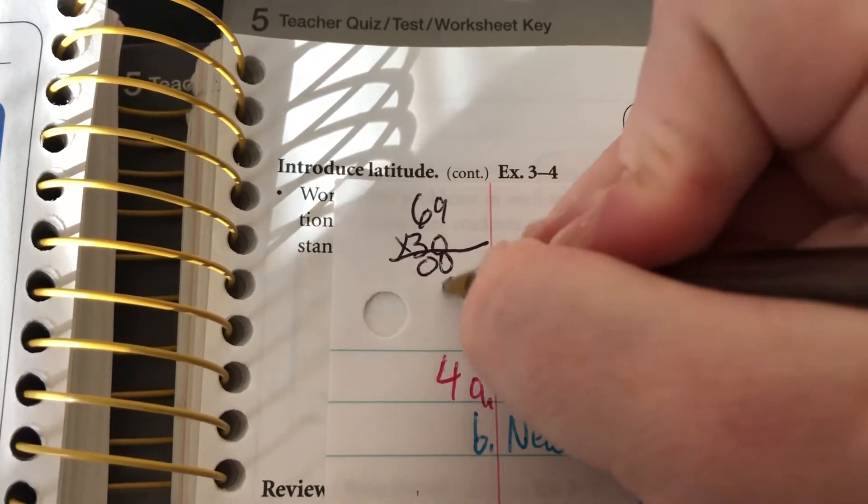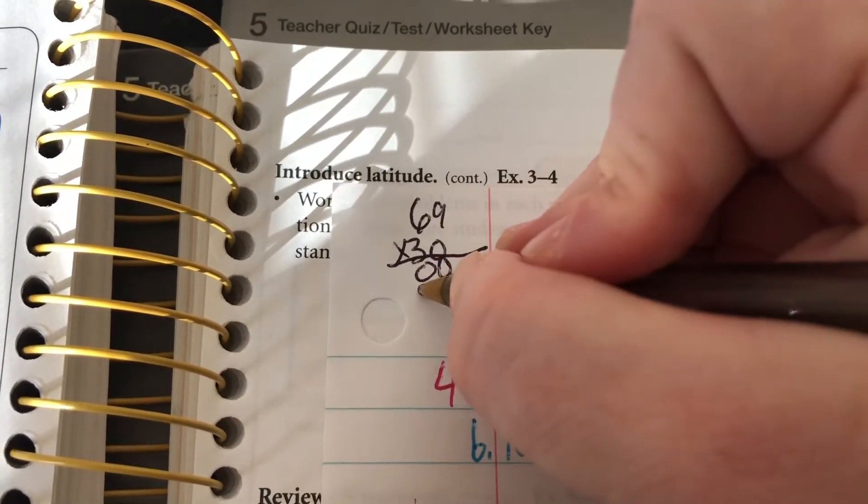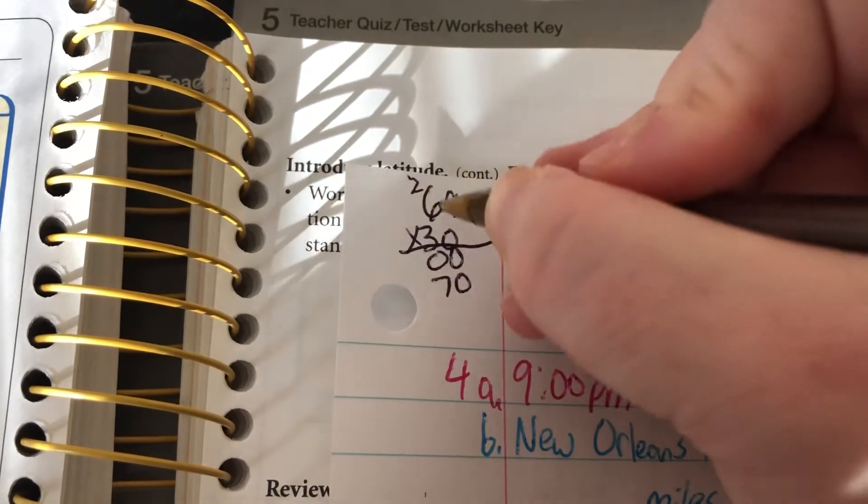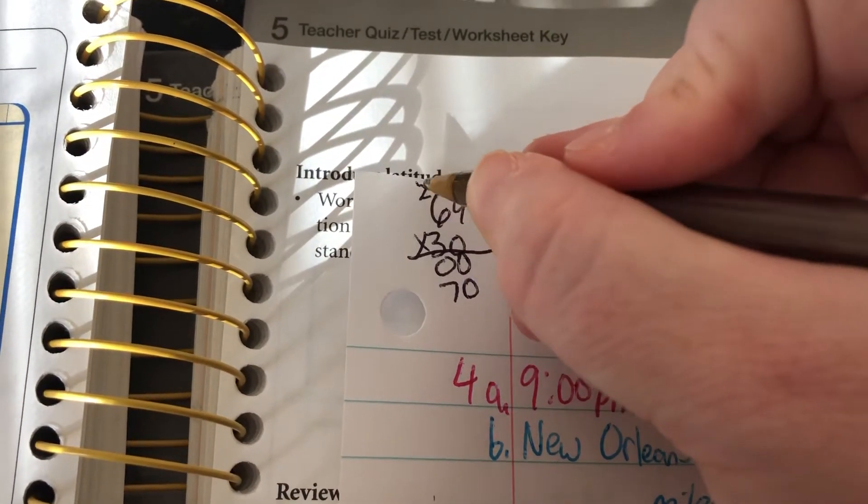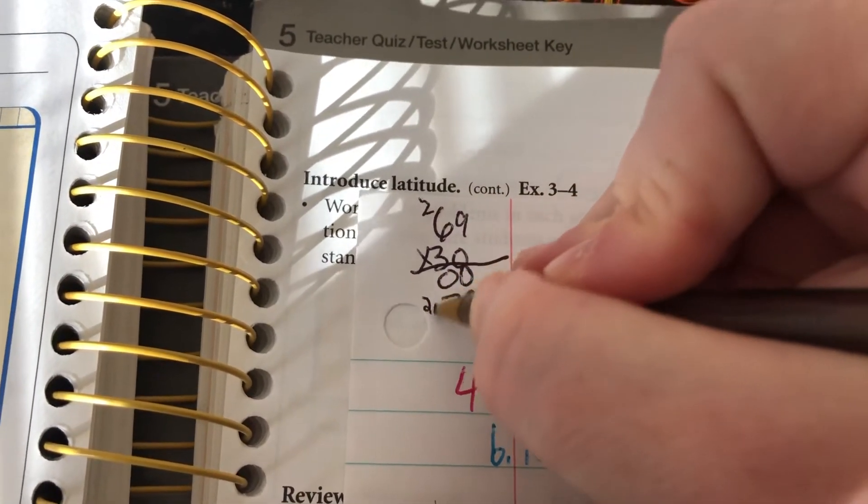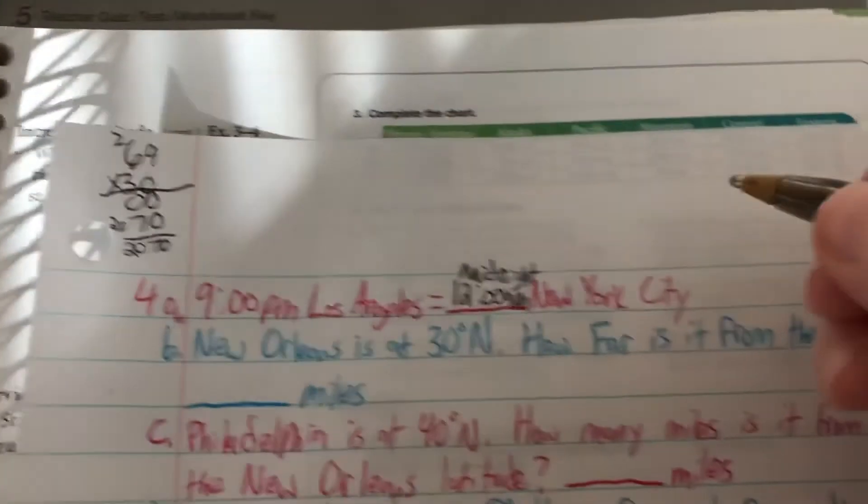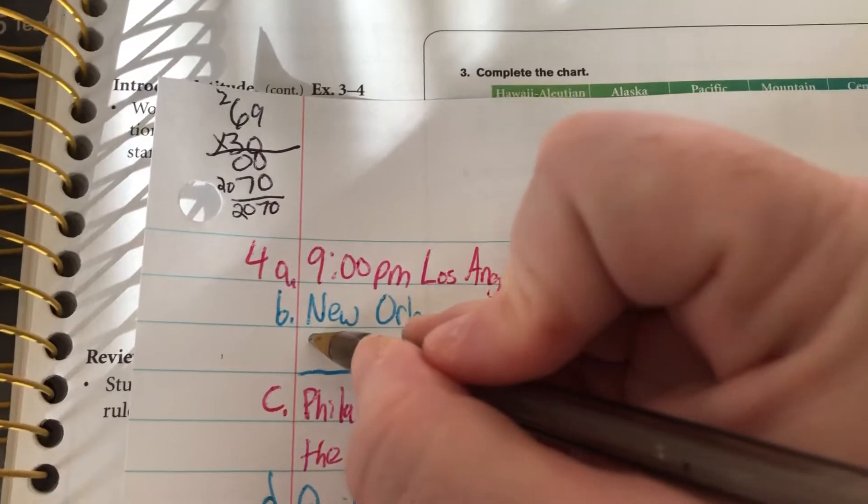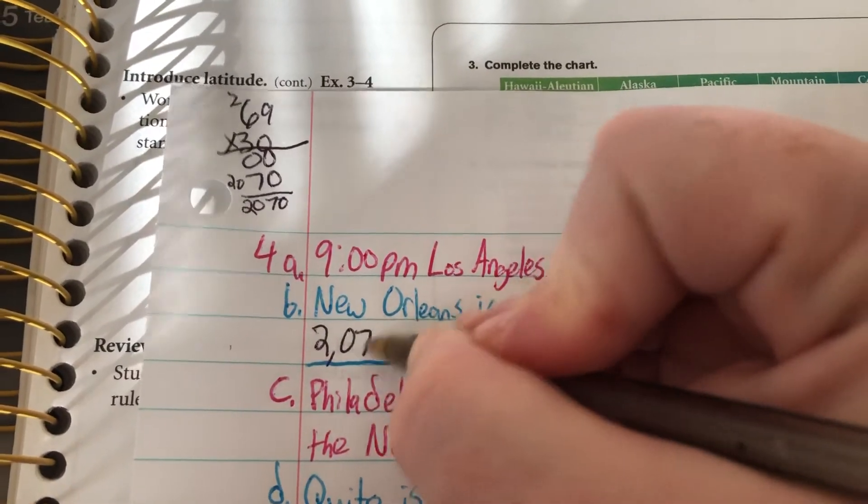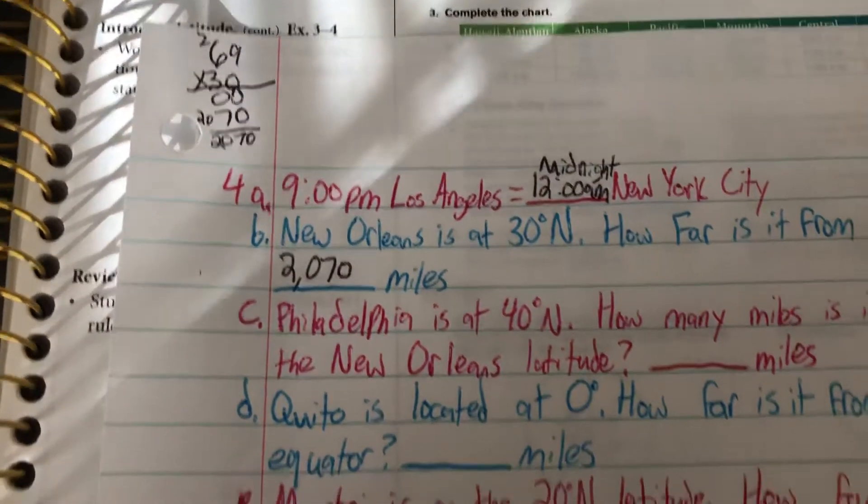69 miles times 30 degrees. 3 times 9 is 27. 3 times 6 is 18, plus 2 is 20. So it is 2,070 miles from the equator.